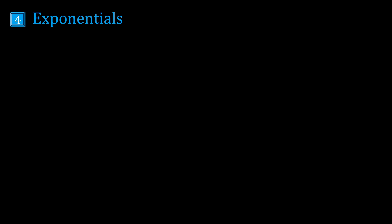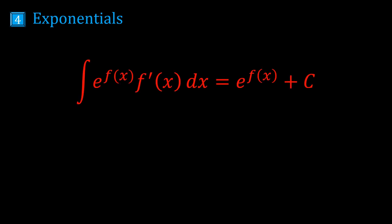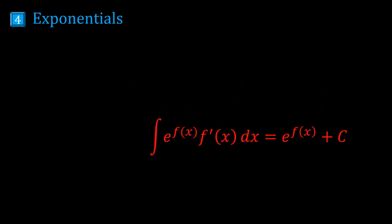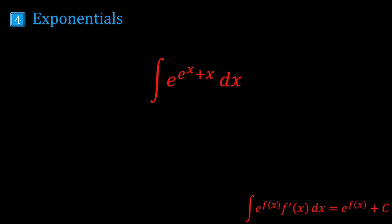Time for exponentials. The integral of e^(f(x)) times f'(x) is just e^(f(x)). For the example e^(e^x + x), we see e is raised to the function e^x + x, but its derivative isn't being multiplied here. So we rewrite using properties of exponents, taking down the x as e^(e^x). Now the exponent is e^x, its derivative is e^x, and we have that being multiplied. So the answer is e^(e^x).